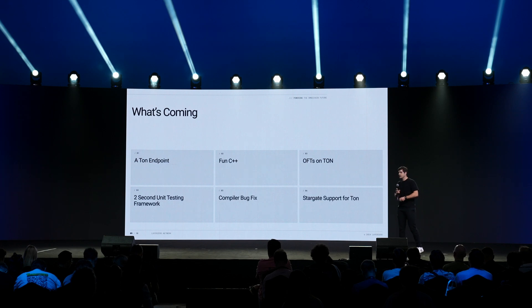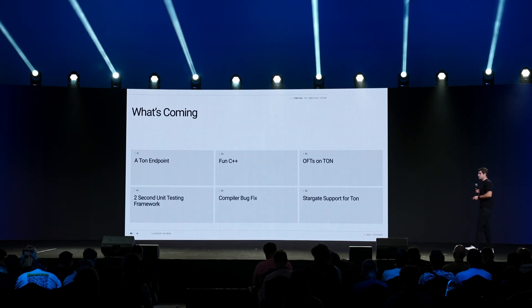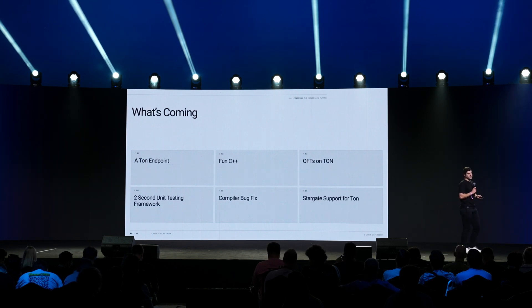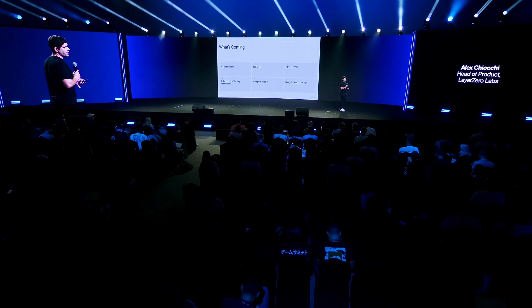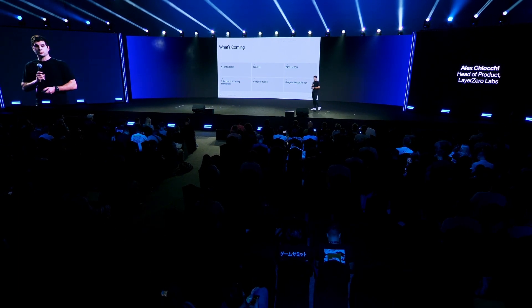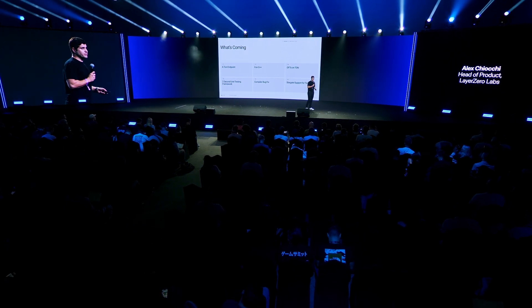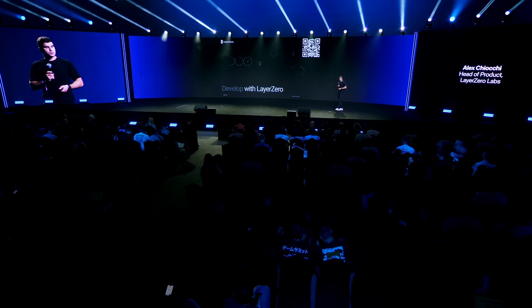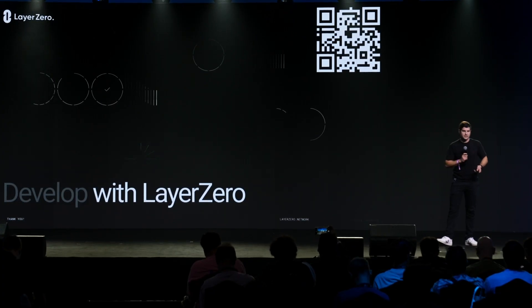So what's coming early next year? A TON endpoint connecting TON to the mesh network of 85 blockchains, leading to many hundreds of billions of dollars of opportunity. FunC++, a new object-oriented language, critical compiler fixes and collaborations, and a two-second unit testing framework. OFTs — omni-chain fungible tokens — meaning any token in TON can be used as an asset on other blockchains, or assets like Wrapped Bitcoin can come to TON. And Stargate support, a liquidity protocol that will enable this to flow very efficiently. We're really excited to see what this awesome community can build with Layer 0 — and I would love to talk to anybody excited to build with us. Thank you, and have fun hacking.